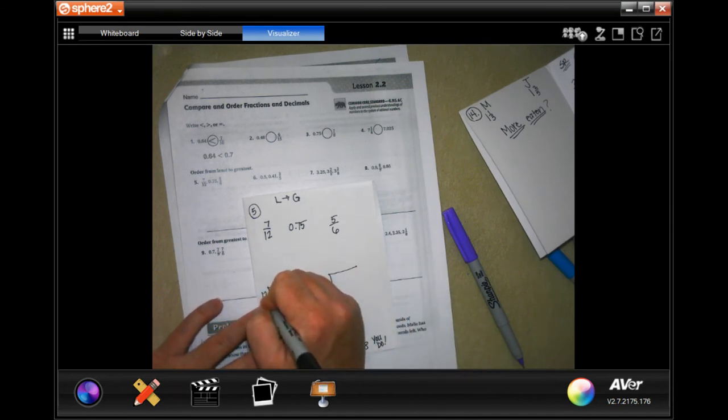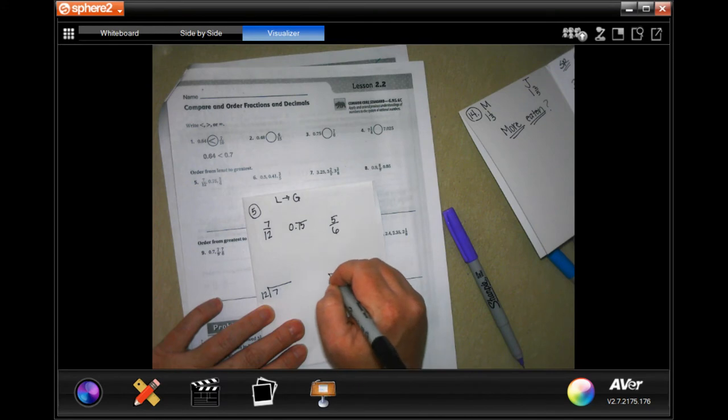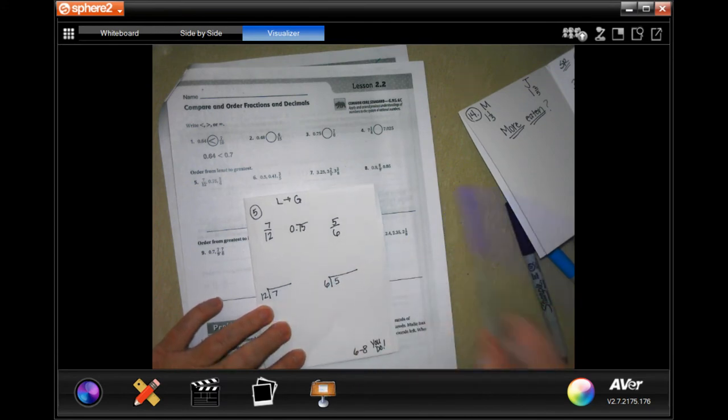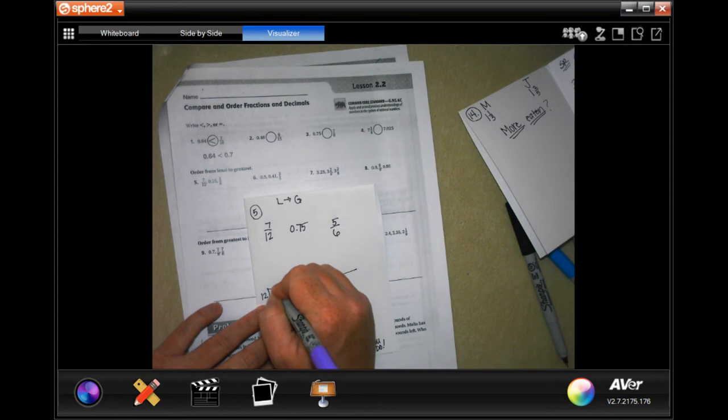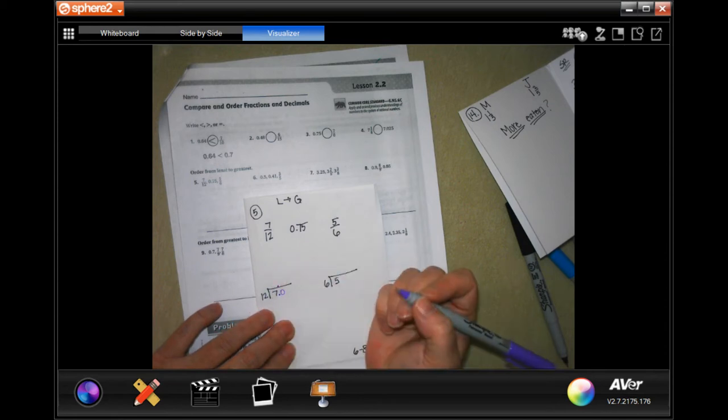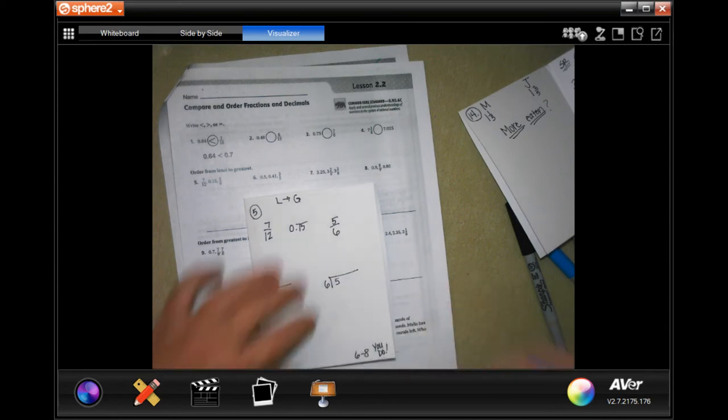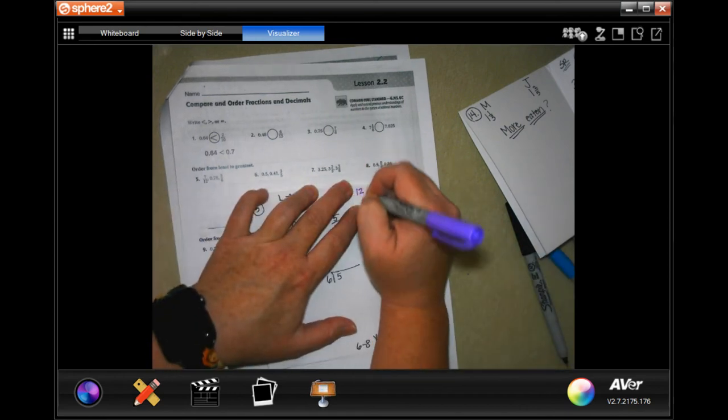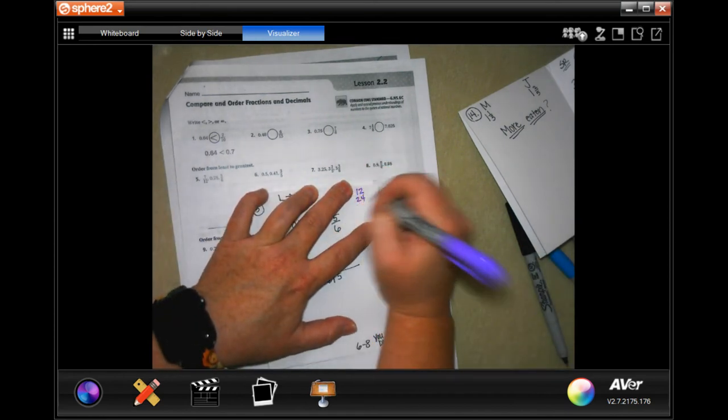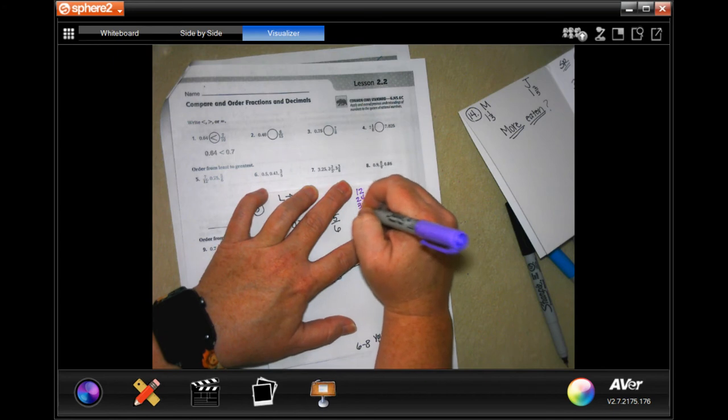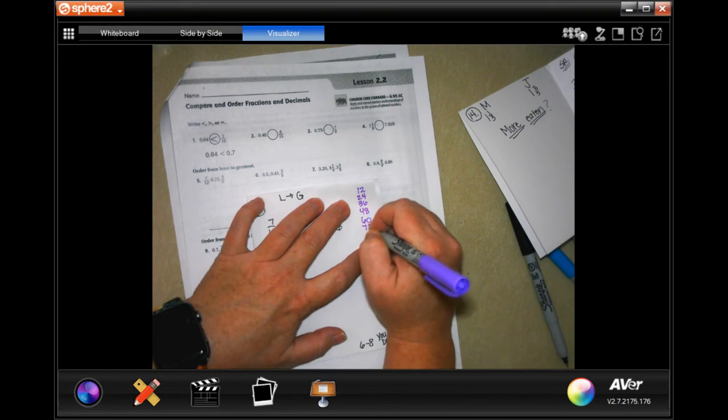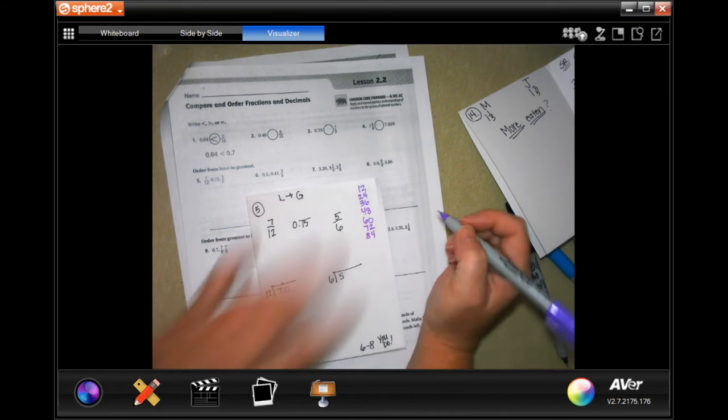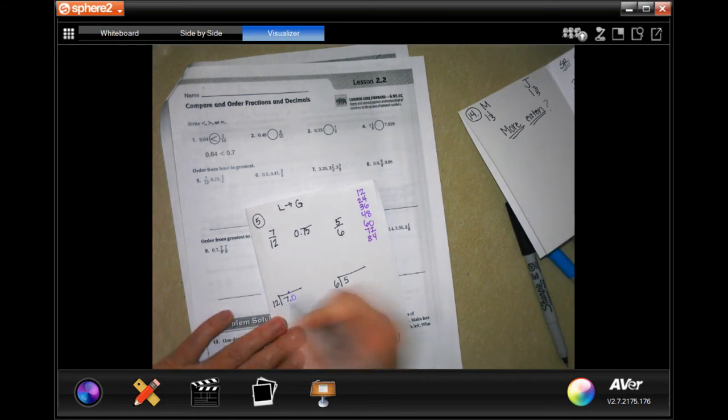We're going to do number 5, because it gives us two numbers that we have to change. So, 7 with a 12 outside, and 5 with a 6 outside. All right. So, 12 is not going to go into 7, so I'm going to put a decimal and a 0. So, 12, let me go over here, and I'm going to write my multiples of 12 real fast. 12, 24, 36, 48, and 60. And then 72, 84.